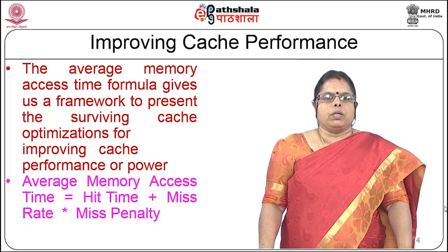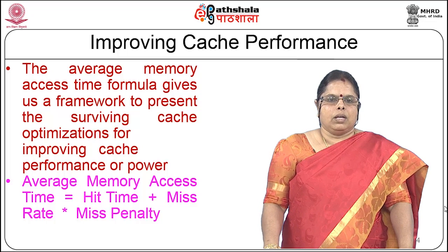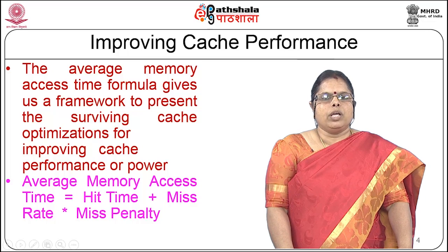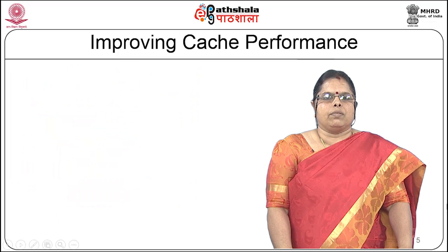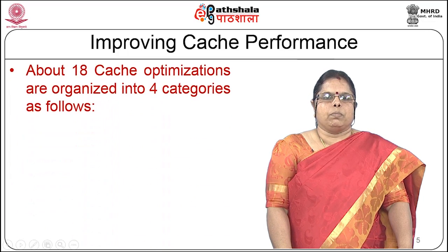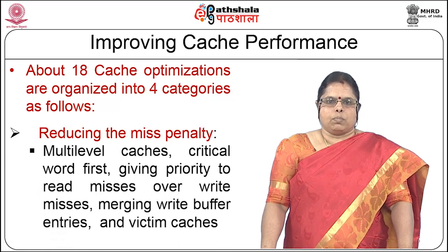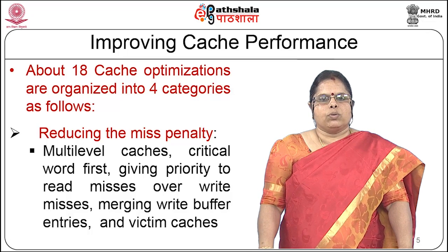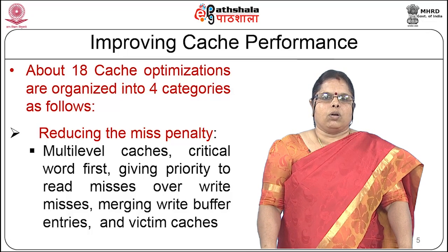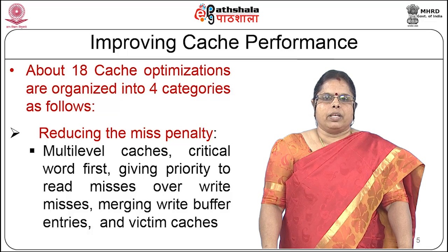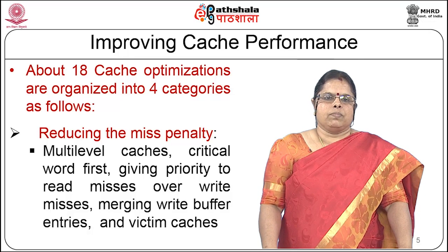The average memory access time is made up of three components: hit time plus miss rate multiplied by miss penalty. In order to reduce the average memory access time, reducing any of these three factors will reduce it. There are about 18 cache optimizations that are possible, and we are discussing some of these. These optimizations can be grouped under various categories depending on which factor they try to optimize.